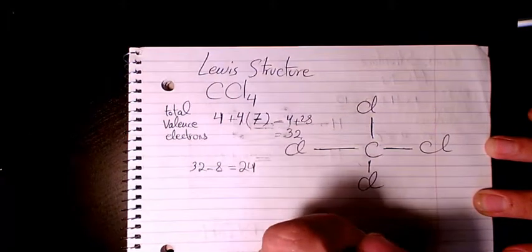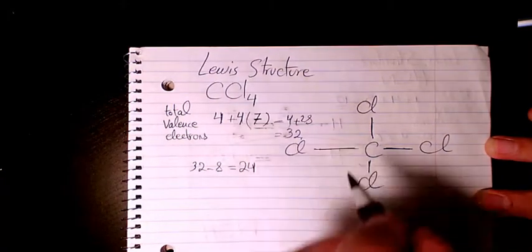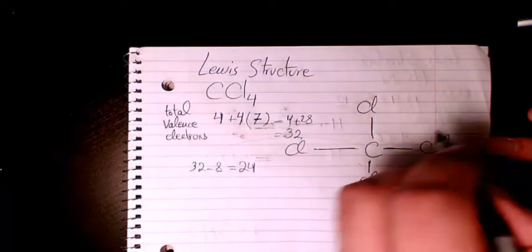So the 24 electrons is going to be the electrons that belong to chlorine.